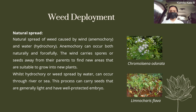The first mechanism of weed deployment is by natural spread. Natural spread of weeds is caused by wind, animal carriers, and water or hydrochory. The wind carries spores or seeds away from their parent plants to find new areas suitable to grow. Hydrochory, or seed spread by water, can occur through rivers or the sea, carrying seeds that are generally light and have well-protected embryos.